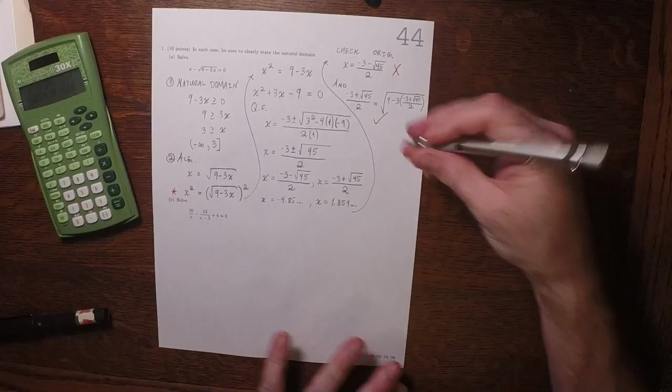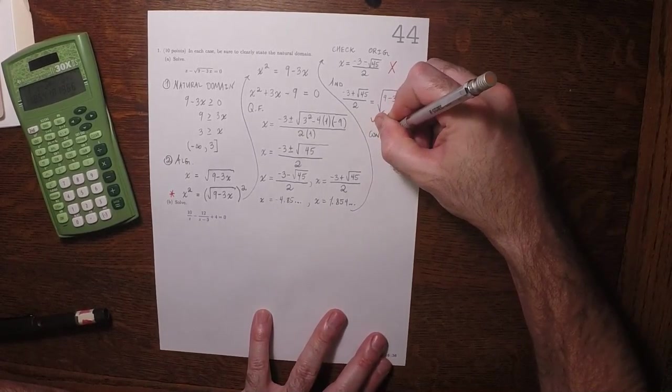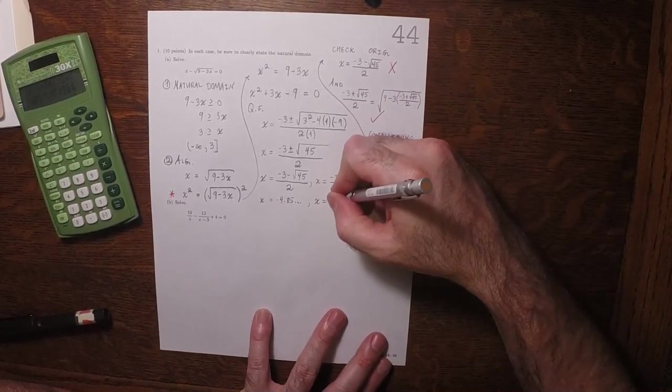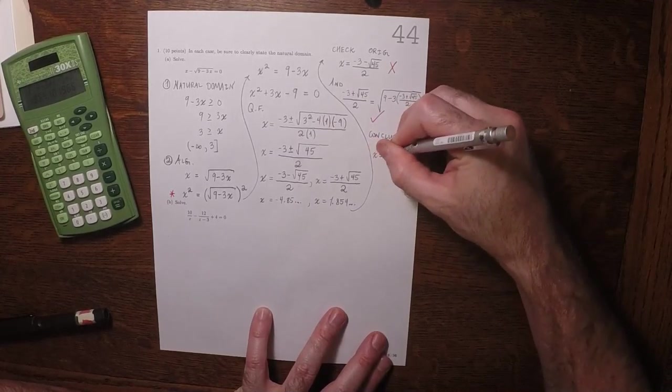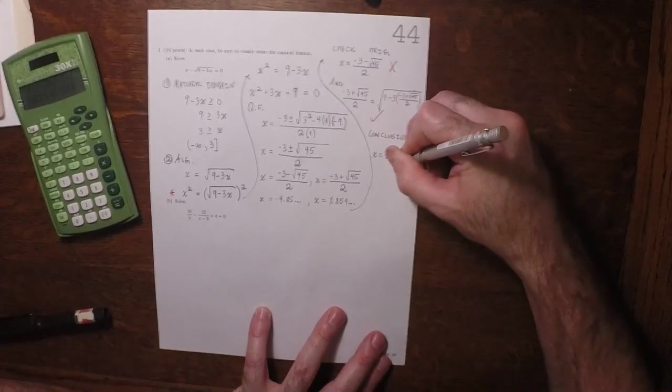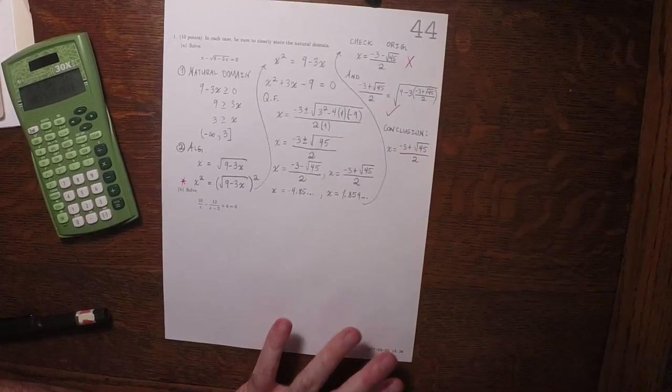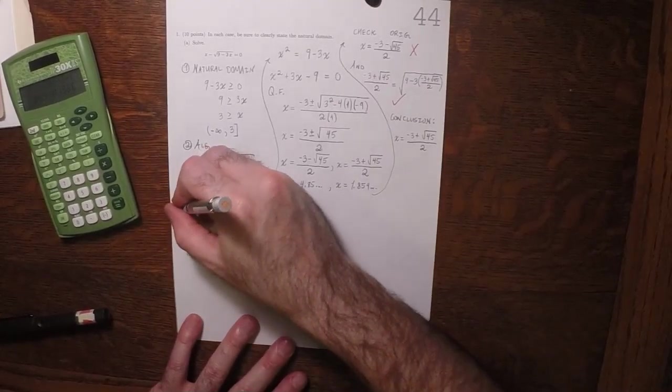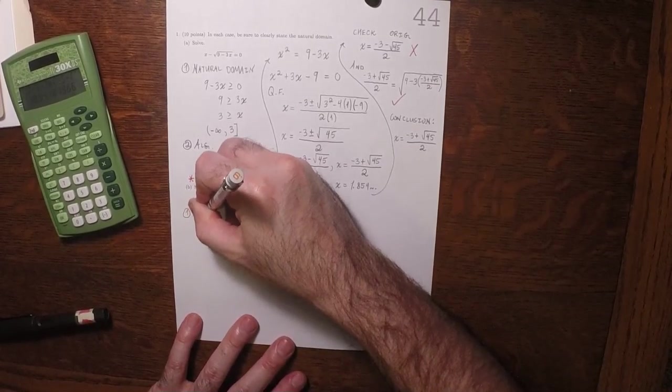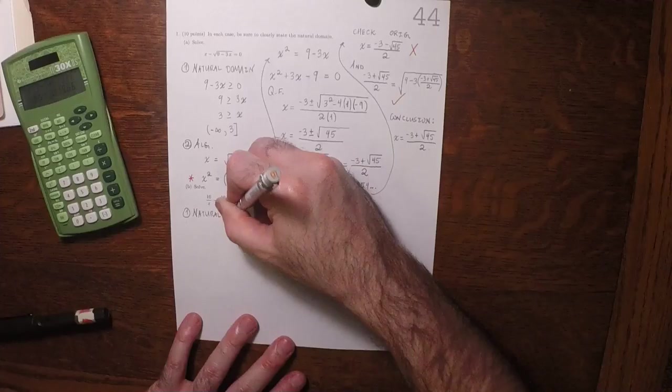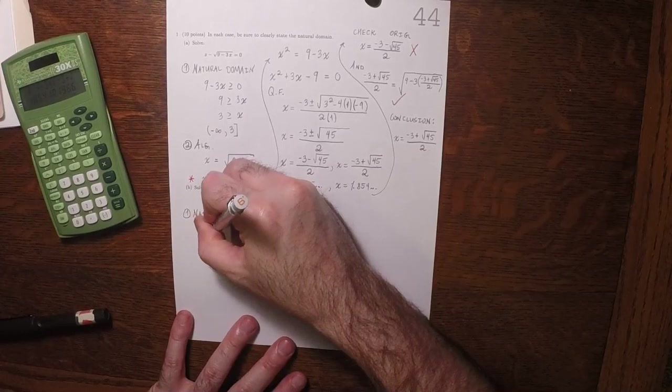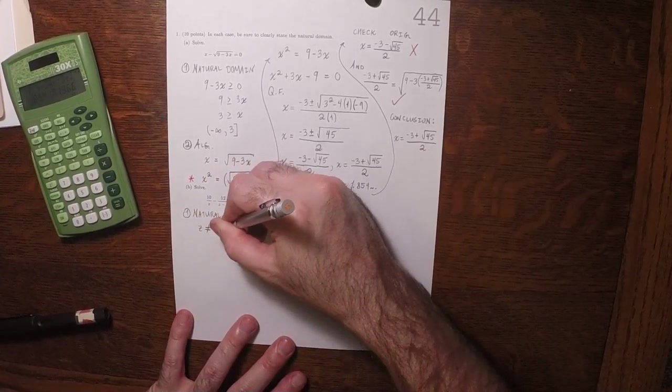So the conclusion. This one is the only answer. x is negative 3 plus the square root of 45 over 2. Okay, as for this one, in the first place,